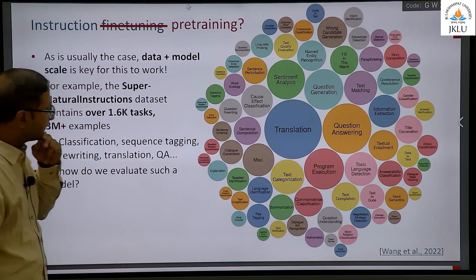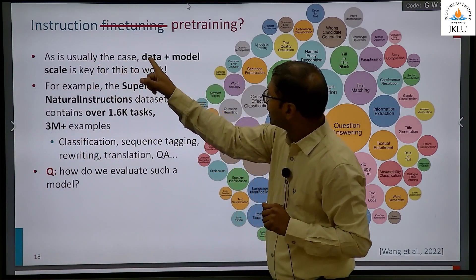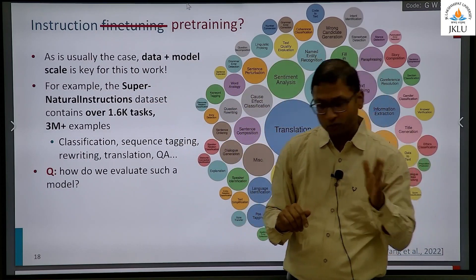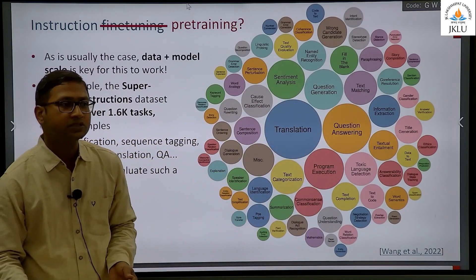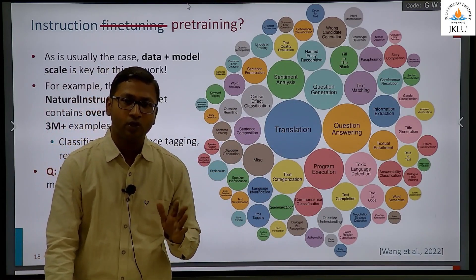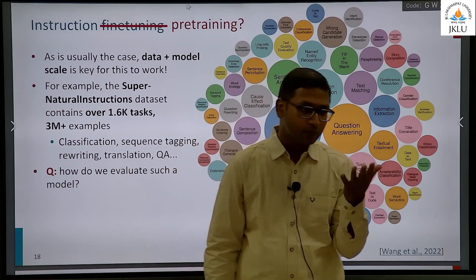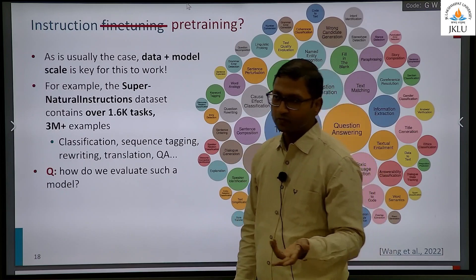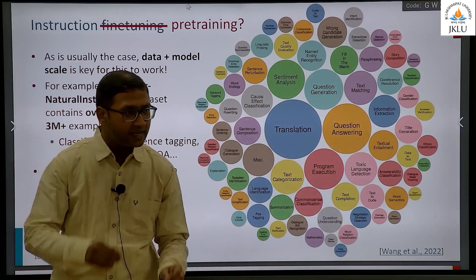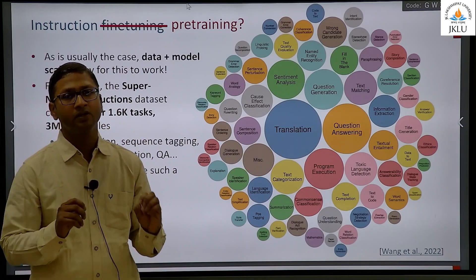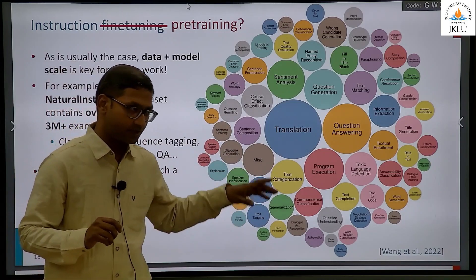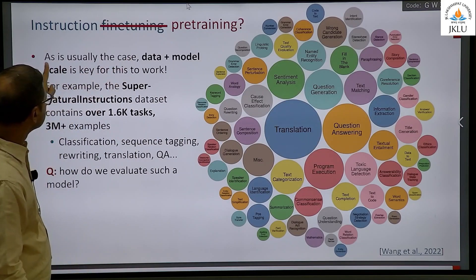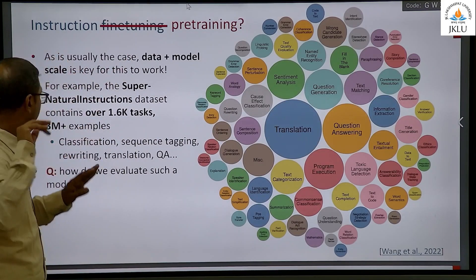As is usually the case, data plus model scale is key for this to work. If anybody asks you what makes ChatGPT or GPT-4 work so well — scale is one of the very big factors here. We have seen in all those papers that scale was a very big factor. Data plus model scale is the key for this to work and other things aid it. For example, the SuperNatural Instructions dataset contains over 1,600 tasks and 3 million plus examples — all these different kinds of tasks.